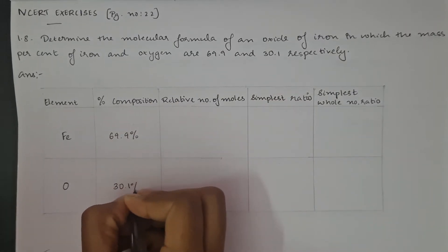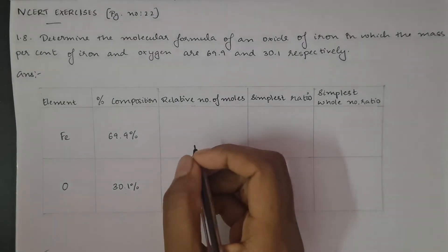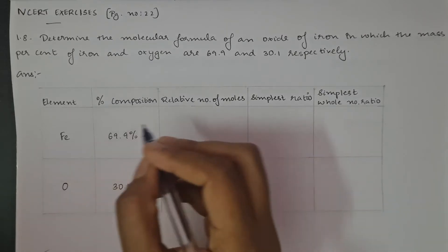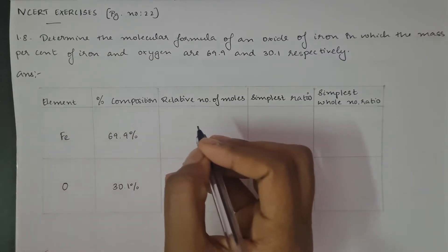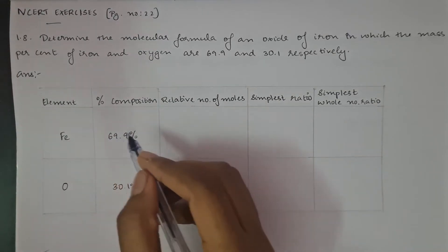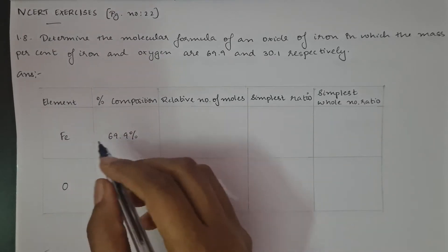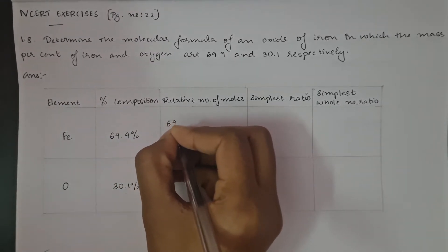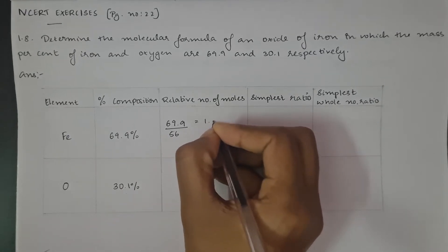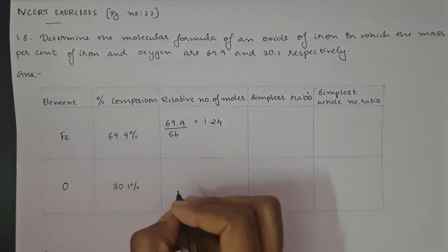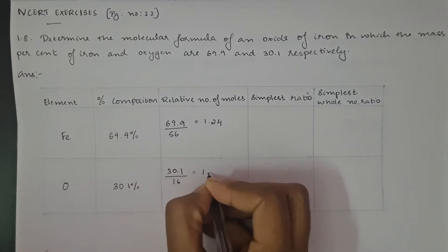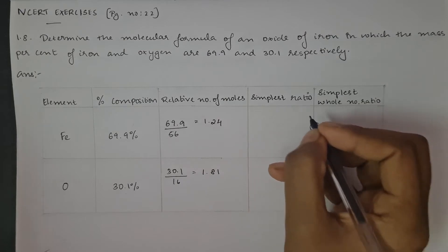Next we have to find out the relative number of moles of these elements. The method is to divide the percentage composition of that particular element by its atomic mass. The percentage composition of iron is 69.9, divided by the atomic mass of iron which is 56, giving us 1.24. In the case of oxygen, the percentage composition is 30.1 divided by its atomic mass of 16, giving us 1.81.